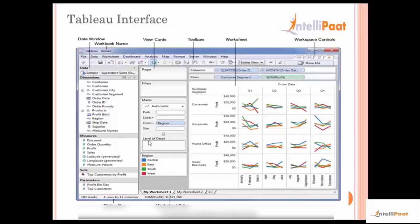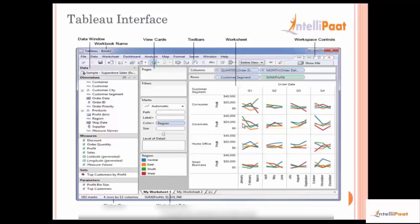The Tableau Desktop interface is something similar to what we are seeing here on the slide. We have different windows for the dimensions and the measures, and the data window. Then we have what are called the shelves — the filter shelf, the page shelf, the marks cards — and this part of the worksheet is very important, which is the rows and the columns.